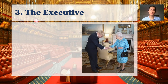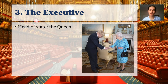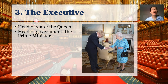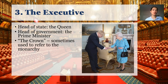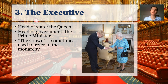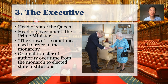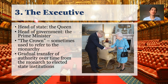Moving on to the second branch — the executive. In the United Kingdom, the head of state is the Queen, the head of government is the prime minister. You'll sometimes also hear the phrase 'the Crown,' which is not just an excellent Netflix series, but also a term used to refer to the monarchy throughout history, as opposed to just the person of the current monarch, Queen Elizabeth II. Over time, there has been a gradual transfer of authority from the monarch to elected state institutions.